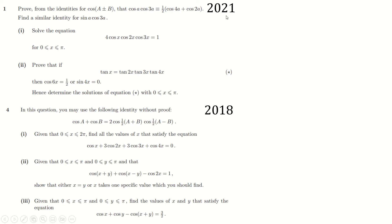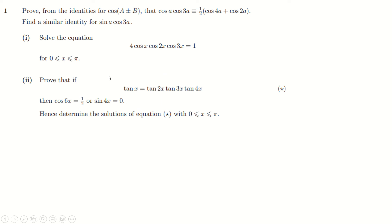Here are a couple of semi-recent trig questions from STEP 2 papers. We'll start with this one and then do the other one in this video. Here's the first question: cos of a plus b. Using that identity, can we prove this thing here?